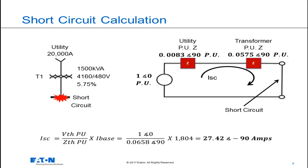Now let's do the calculation of fault current based upon the 20,000 amp available from the utility. The short circuit current is calculated to be 27,420 amps.